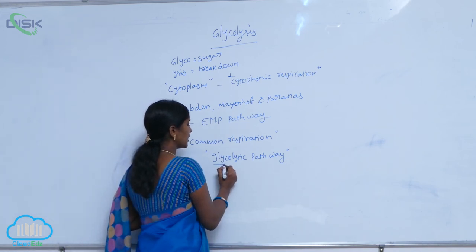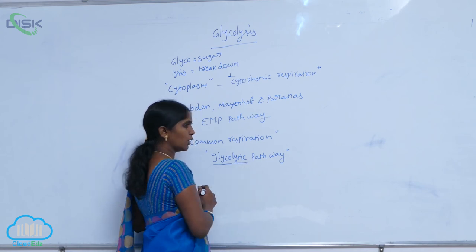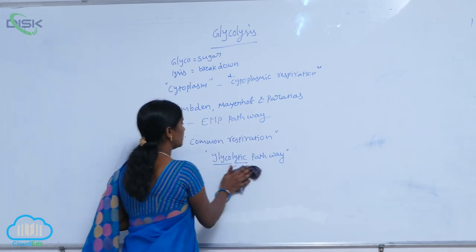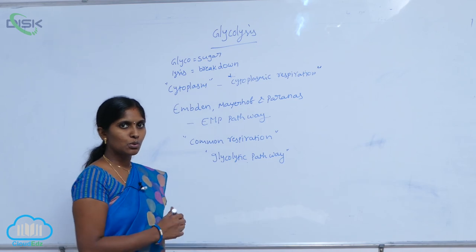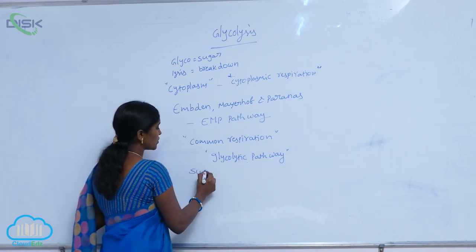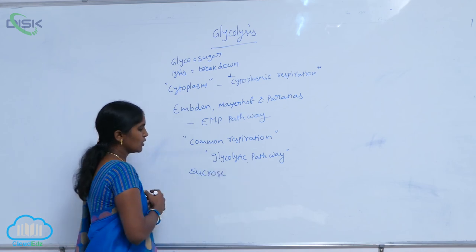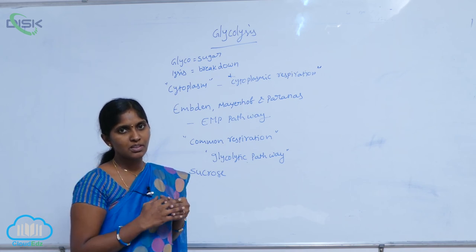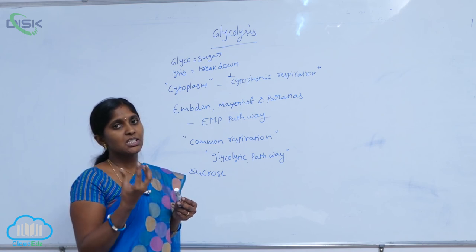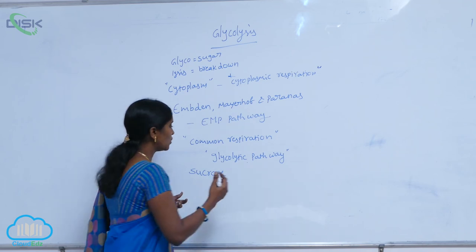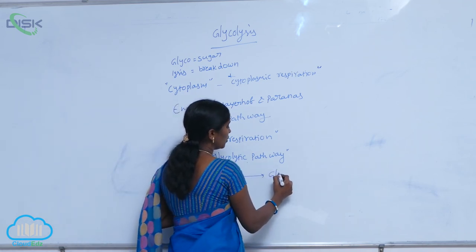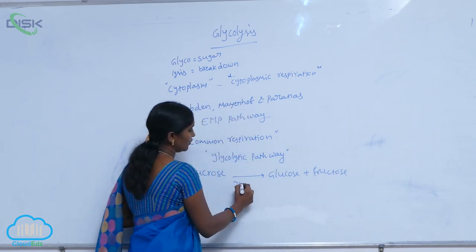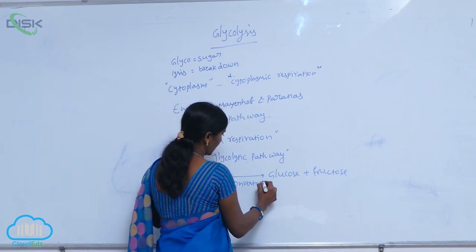In the glycolytic pathway, glyco means glucose and lytic means breakdown, so glucose is broken down here. The source of glucose in plants is sucrose. Sucrose comes from photosynthesis — it is the end product of photosynthesis. Sucrose is then converted into glucose and fructose in the presence of the enzyme invertase.